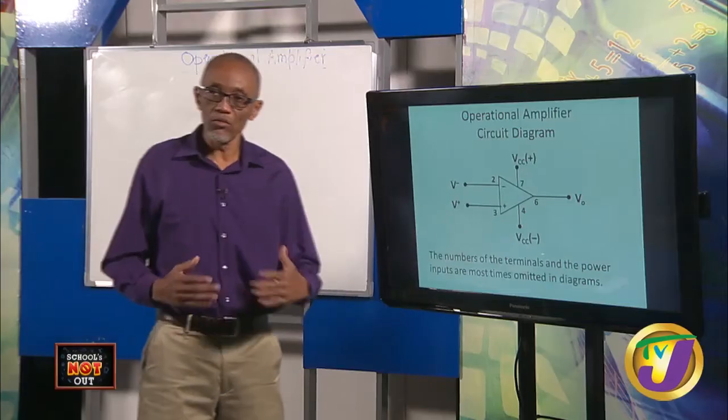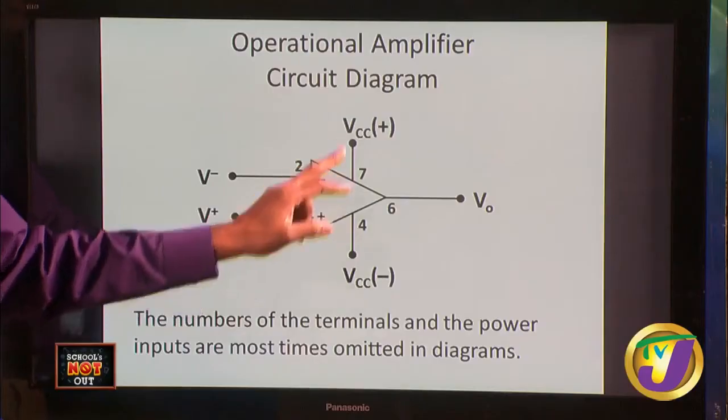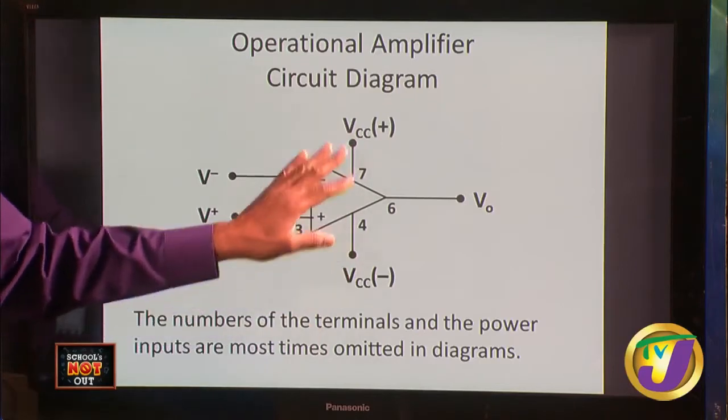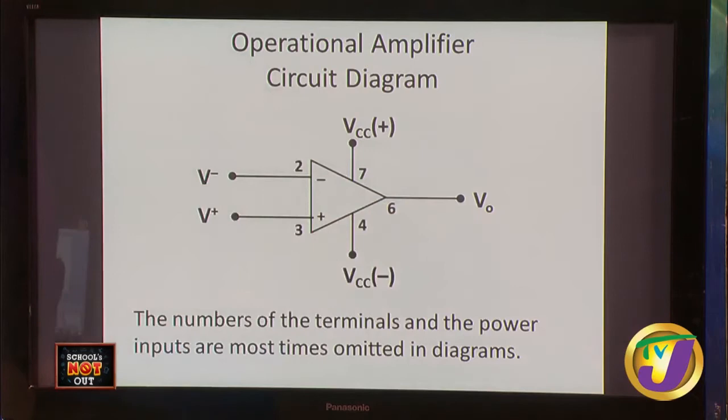Generally when drawing an op-amp in a circuit, the power connections are left out — it is understood that it is being powered — and the pin numbers are also left off. We leave them out for clarity; if you put too many things in a circuit it becomes confusing, and we know what the circuit elements are.